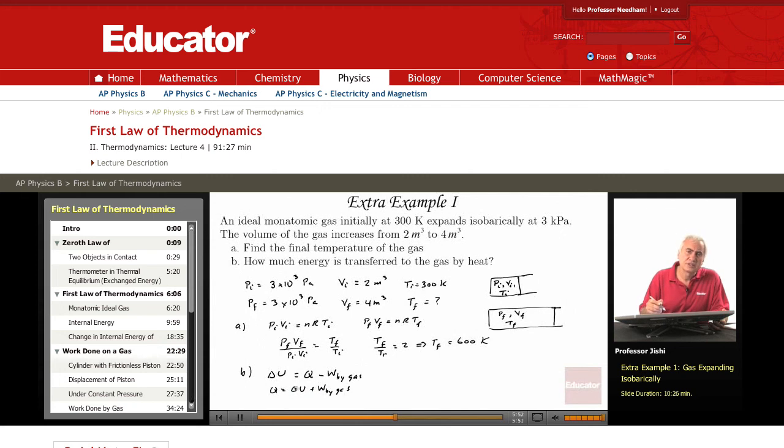This means that Q is delta U plus the work done by gas. Since this is an ideal monatomic gas, the change in internal energy is 3 over 2 nR delta T, which is TF minus TI. The work done by the gas since the expansion takes place at constant pressure is P delta V, which is VF minus VI.